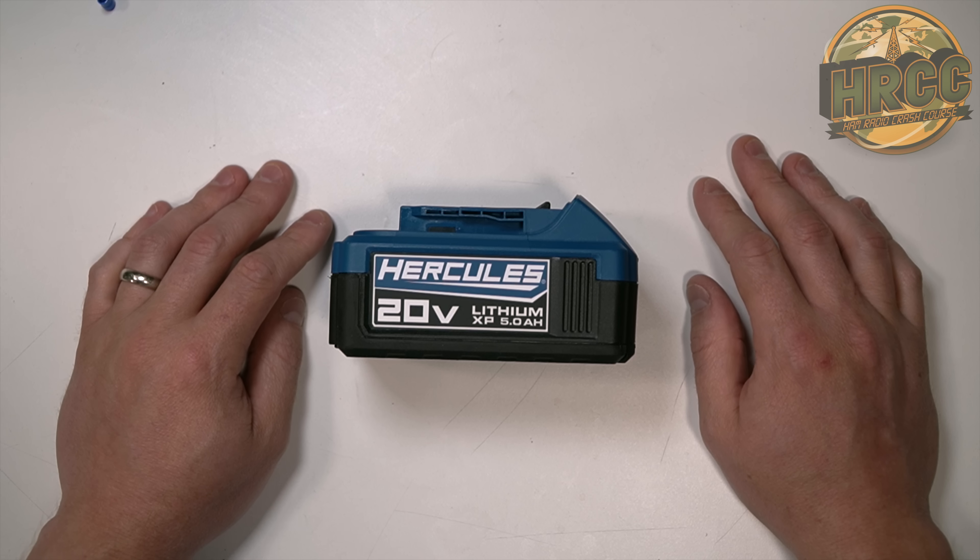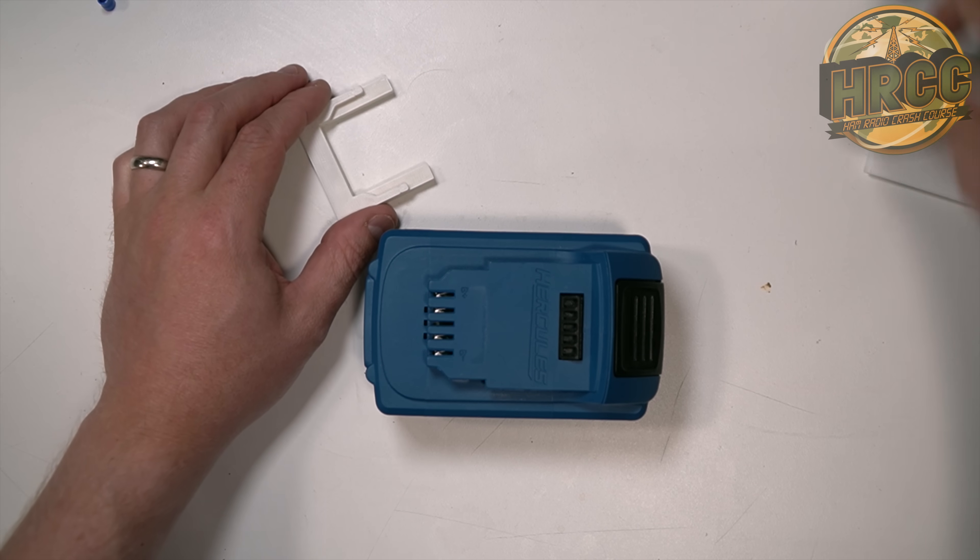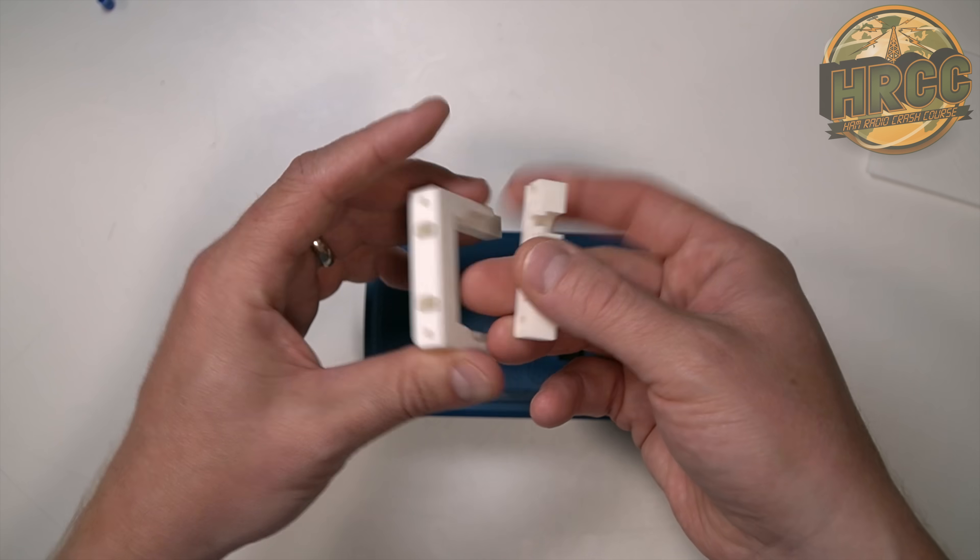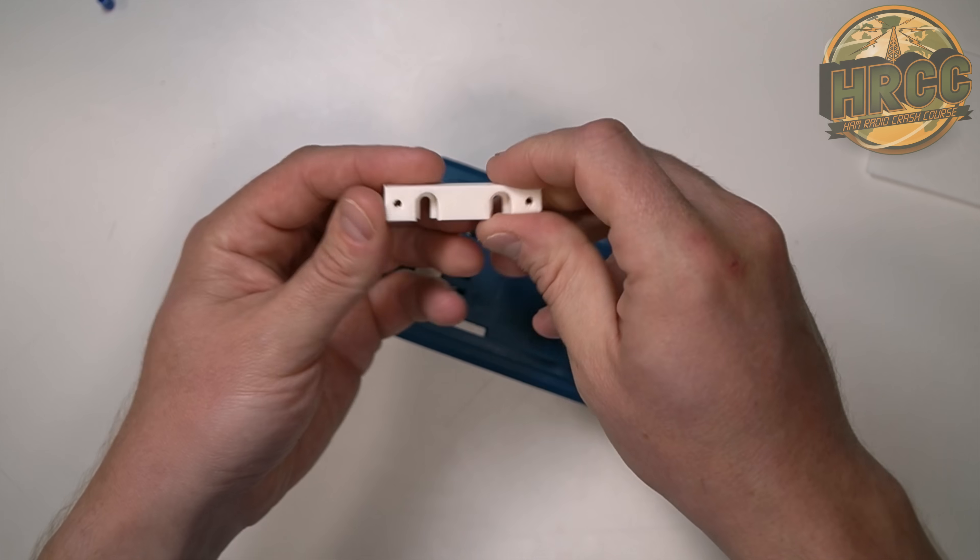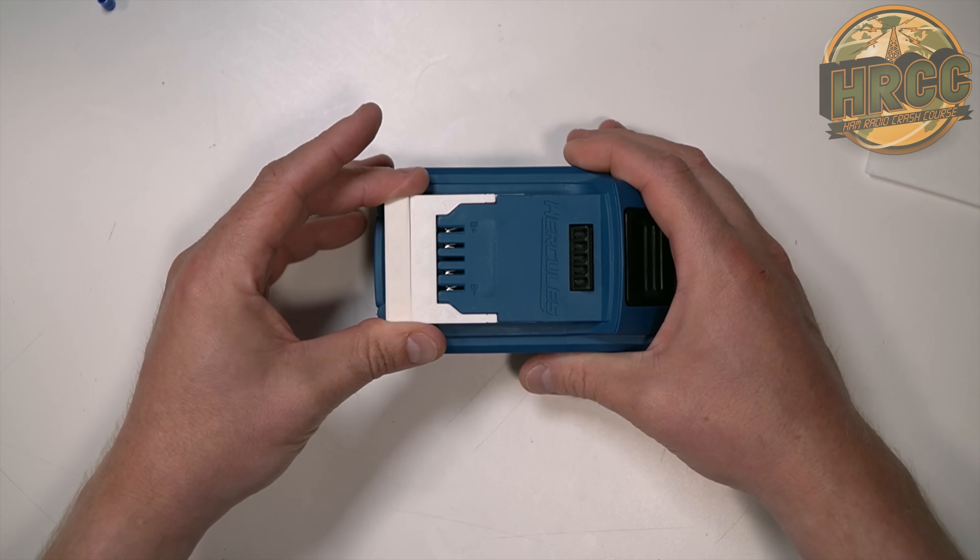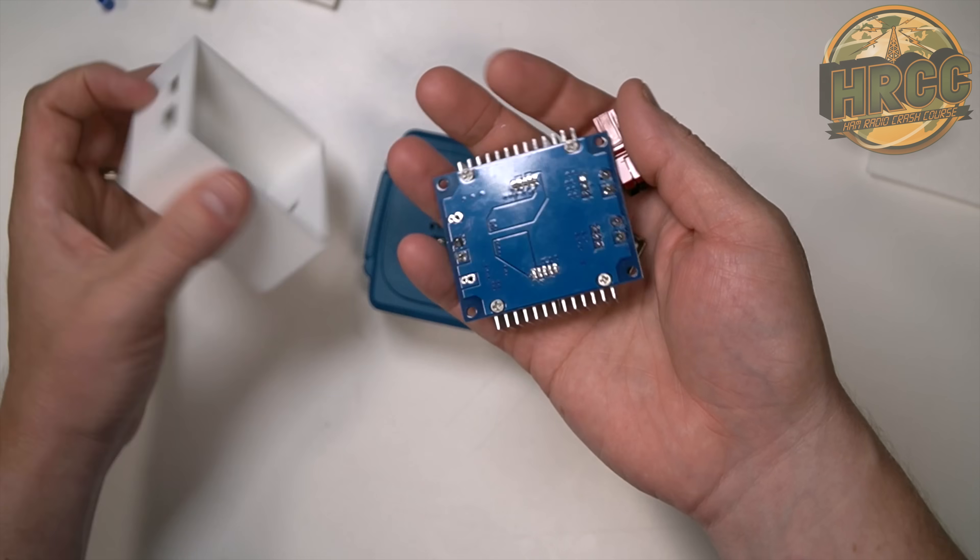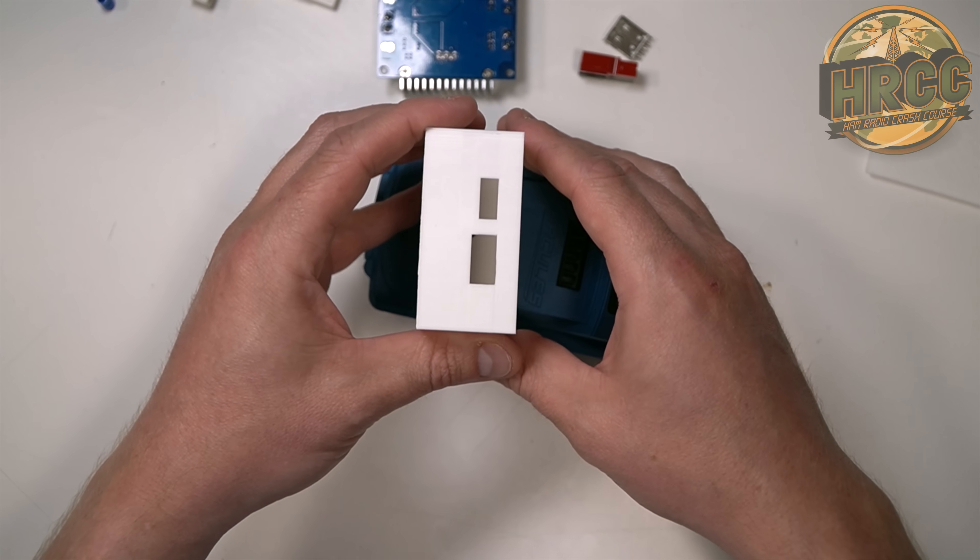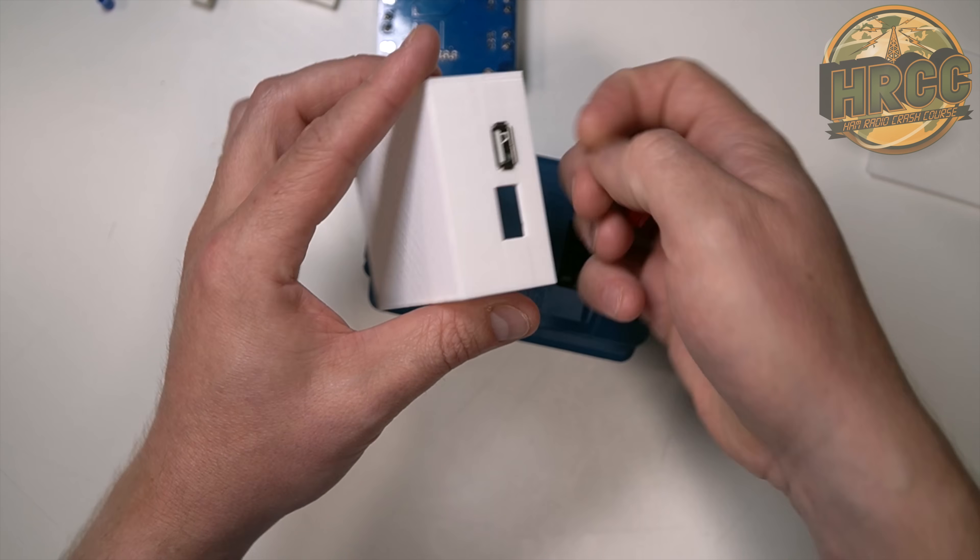So I thought there's got to be some 3D printed models out there. And sure enough, there are that can get you to the point of power adapter capability. So with this here, and then you add some spade connectors and bolt this into the back. And now you have a battery connection. Well, I decided to take it a step further and print up a box with a hole and then two adapters for things like USB and an Anderson's.